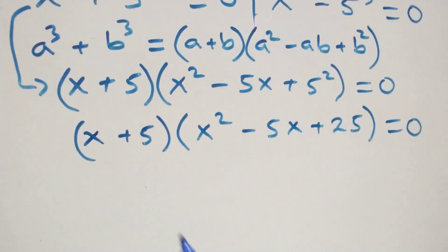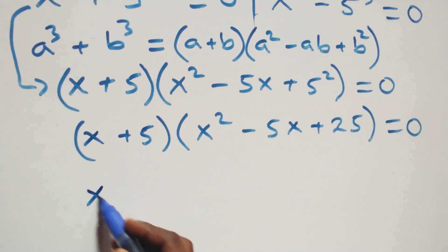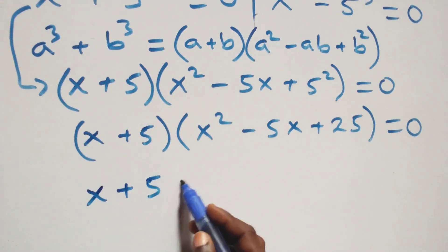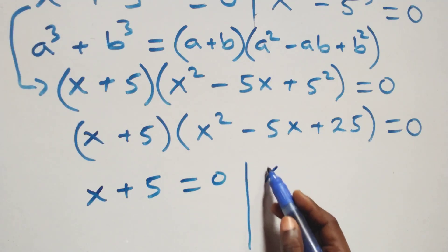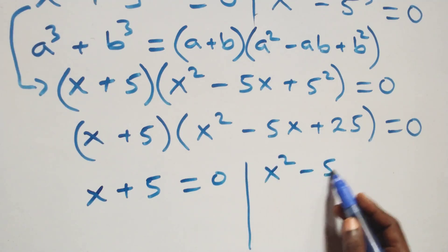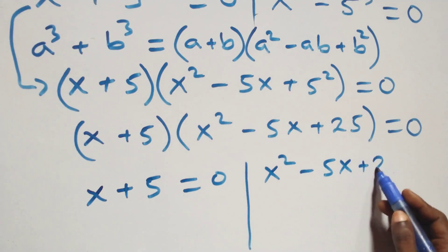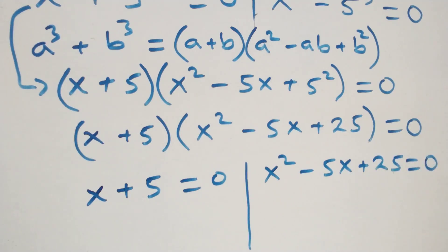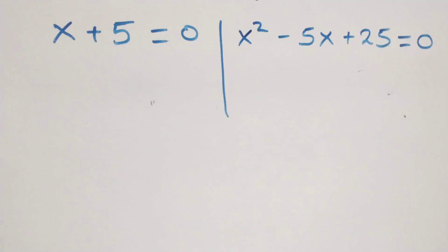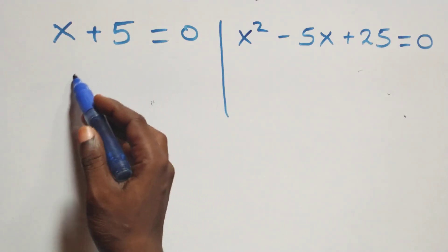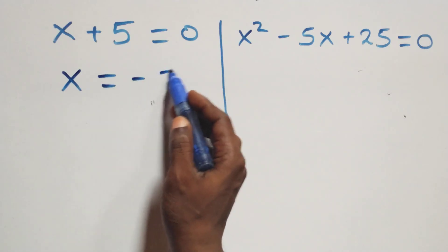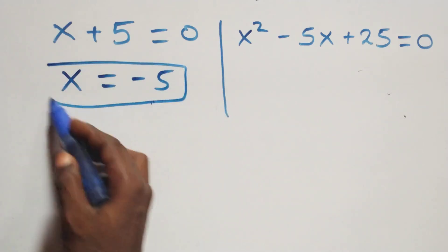Then we also have two possible cases here. The first one: x squared minus 5x plus 25 equals to 0. And solving from the other factor, this becomes x equals to minus 5, which is a real solution.